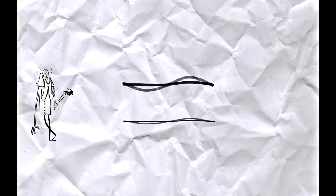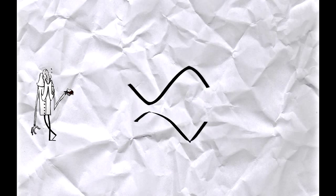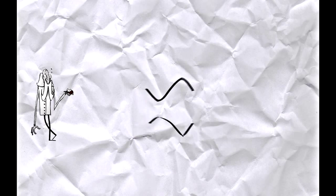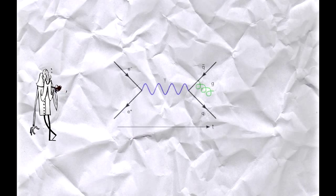¿Y de qué están hechas estas partículas? Examinemos una cuerda física. Estas pueden vibrar en distintas frecuencias produciendo diferentes notas. Ahora imagina una cuerda un billón de billón más pequeña que un átomo. Y cuando esta vibra, en lugar de producir un sonido, se manifiesta en una partícula.